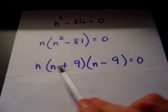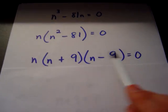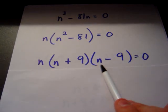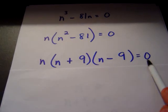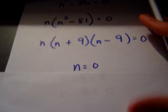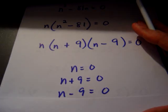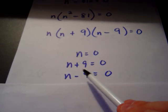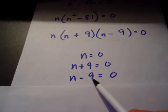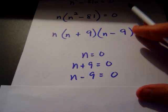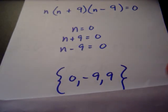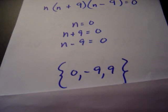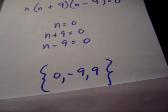Now we have three factors. This n could be equal to 0, this n plus 9 could be equal to 0, and this factor of n minus 9 could be equal to 0. So we set up our three situations and solve each of them to get n by itself. We get n equals 0, n equals negative 9, and n equals positive 9. Those are the three solutions to this equation.